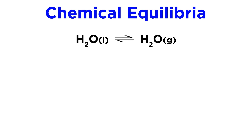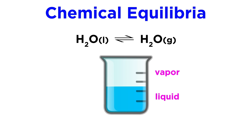Equilibria exist in the way of physical processes too, like phase changes, such as the equilibrium between liquid and vapor for any substance in a closed container. Some particles are vaporizing and some particles are condensing at any given time, but at equal rates, so the system appears inactive.